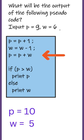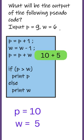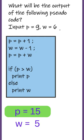Then in the third line, we have to perform p plus w. p contains 10 and w contains 5. The result is 15. That result will be stored in p. So now p contains 15.